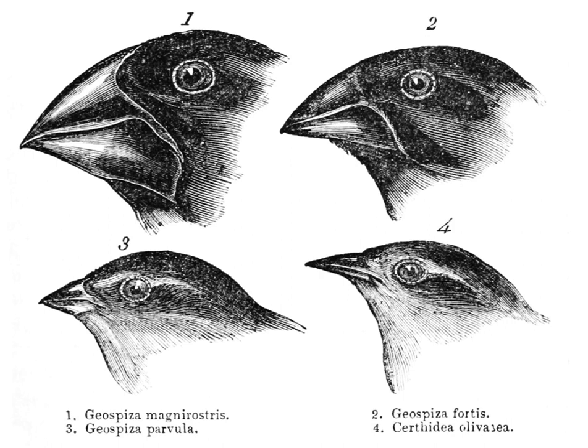The largest beak in the genus Geospiza is shown in Fig. 1, and the smallest in Fig. 3, but instead of there being only one intermediate species with a beak of the size shown in Fig. 2, there are no less than six species with insensibly graduated beaks. The beak of the subgroup Certhidia is shown in Fig. 4. The beak of Cactornis is somewhat like that of a starling, and that of the fourth subgroup Camarhynchus is slightly parrot-shaped. Seeing this gradation and diversity of structure in one small, intimately related group of birds, one might really fancy that from an original paucity of birds in this archipelago, one species had been taken and modified for different ends. In a like manner it might be fancied that a bird originally a buzzard had been induced here to undertake the office of the carrion-feeding polybori of the American continent.